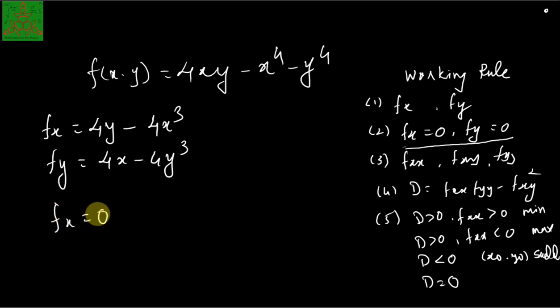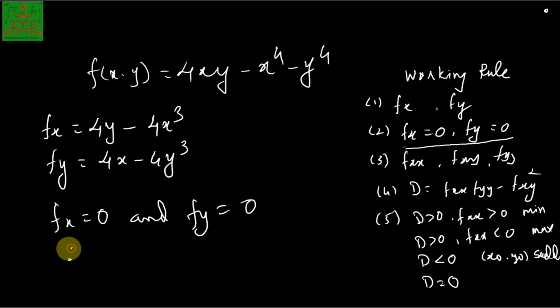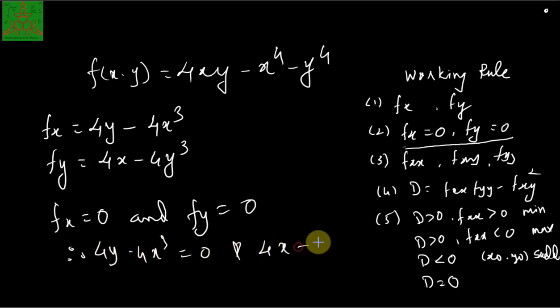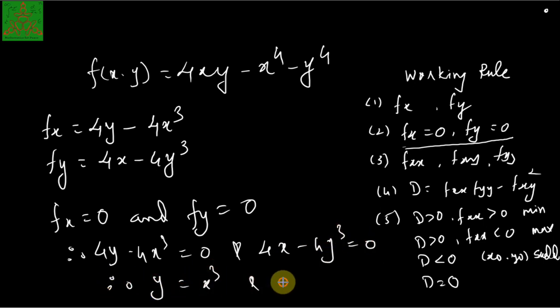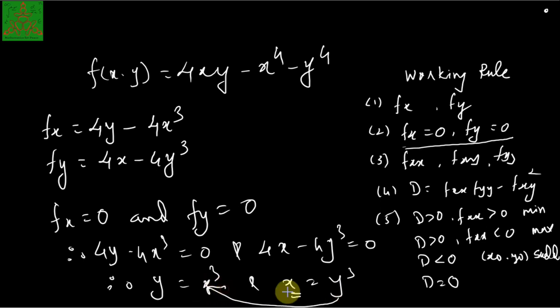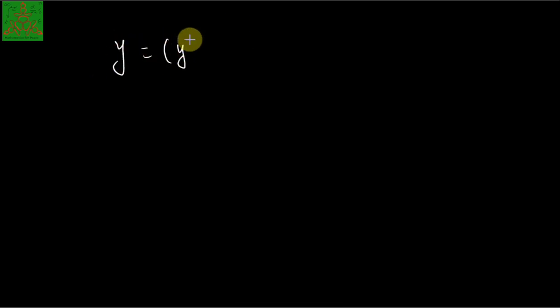The second step is to find the values of x₀ and y₀ by setting fx equal to zero and fy equal to zero. So we have 4y minus 4x cubed equal to zero and 4x minus 4y cubed equal to zero. This gives y equal to x cubed and x equal to y cubed. Substituting the value of x into the first equation, we get y equal to y cubed cubed, that is y raised to 9.